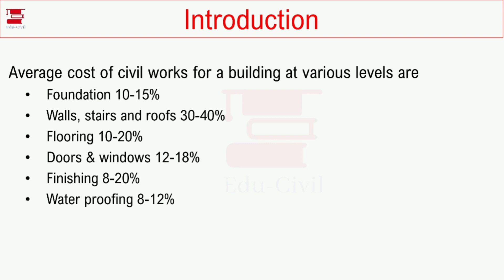Flooring 10-20%, doors and windows 12-18%, finishing 8-20%, and waterproofing 8-12%. This is the breakdown of total cost into average cost components at various levels.